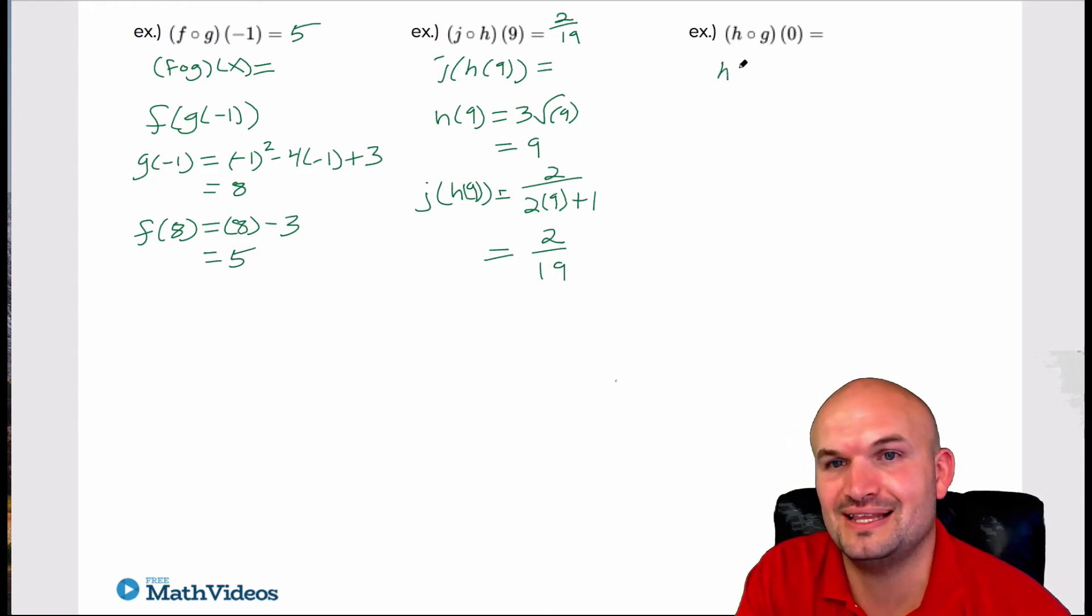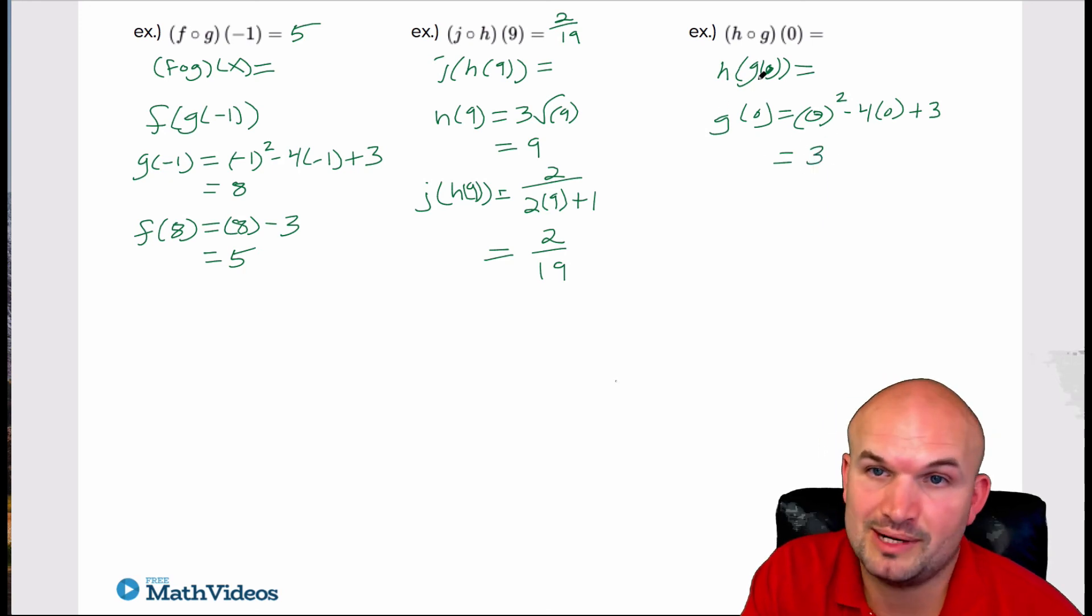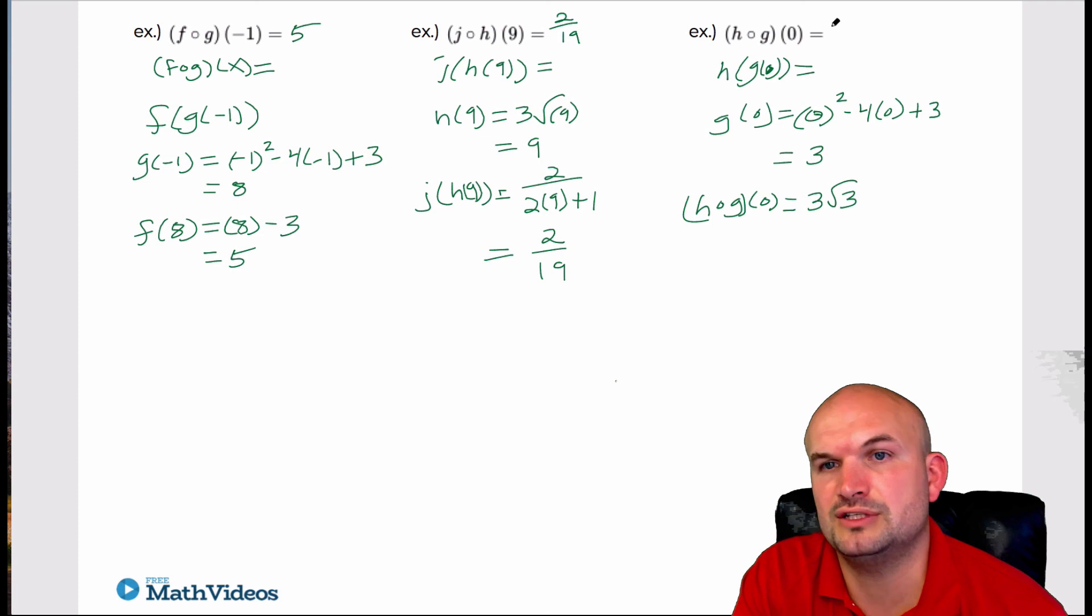And last but not least, h of g of zero. So again, that is h of g of zero. So let's figure out what g of zero is first. So g of x is, man, I hate my g of x. That's going to be zero squared minus four times zero plus three. Is that what I planned on doing? Is that what I did? I guess I didn't even write that one in. G of zero. So let's see, g of zero, that becomes zero, that's zero. So that's just going to be three. And now I'm going to plug in that into my h of x function, which is going to be, so h of g of zero is going to be three radical three. There's really nothing else I can do with that. So I'll just leave that as that answer.